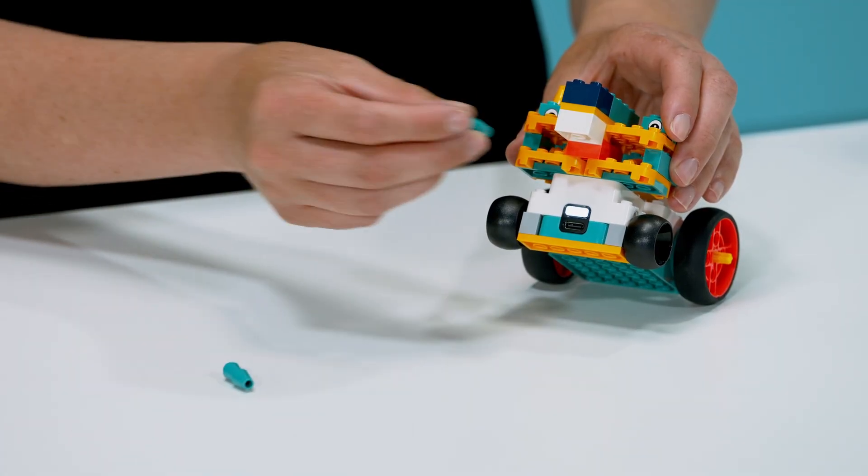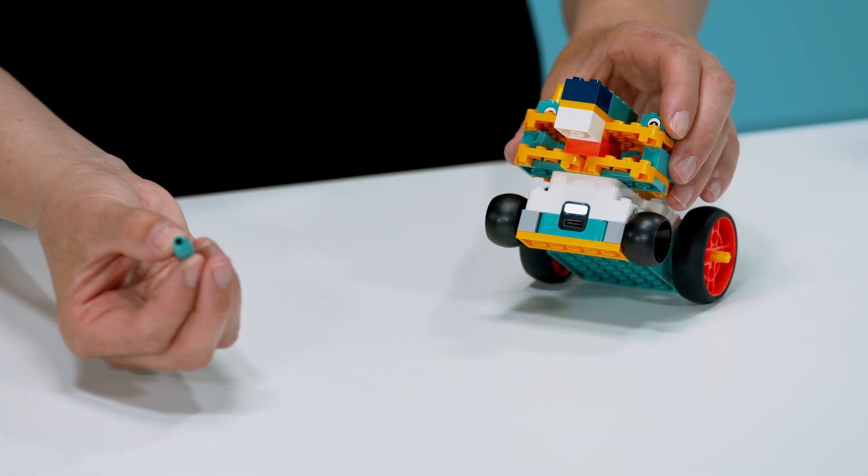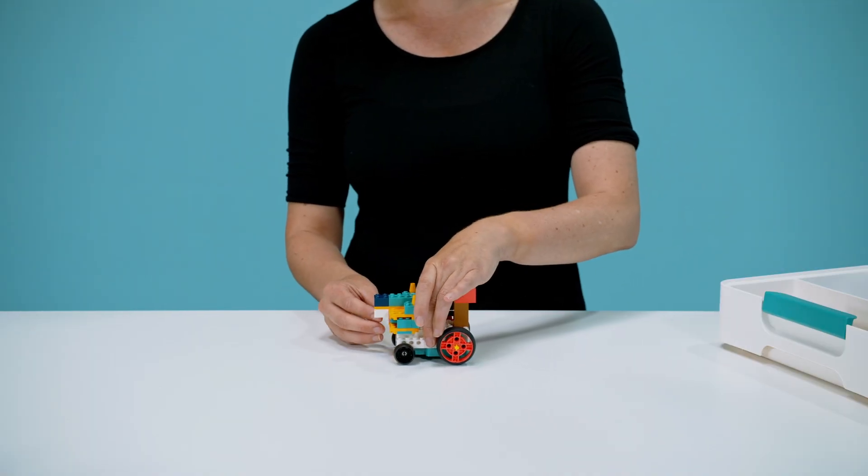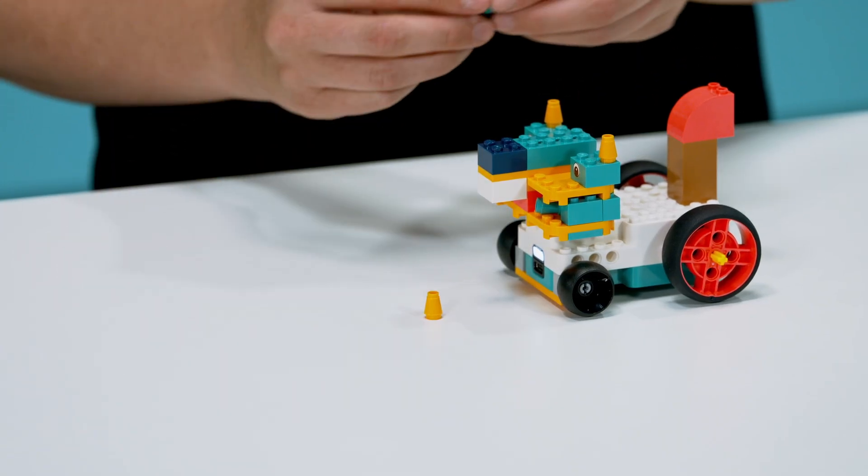Students will role-play the squirrel moving to different spots around the group to hide each seed by stopping the squirrel, removing a seed, and then moving to a new spot.